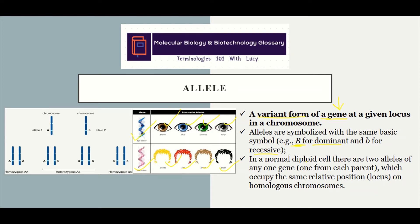we are simply saying that in a normal diploid cell, we will have two alleles of any given gene because we have chromosomes coming from each parent. For example, we have this chromosome coming from the father and this chromosome coming from the mother — these are what we call homologous chromosomes. They are usually in pairs because one copy comes from your dad and another comes from your mom.